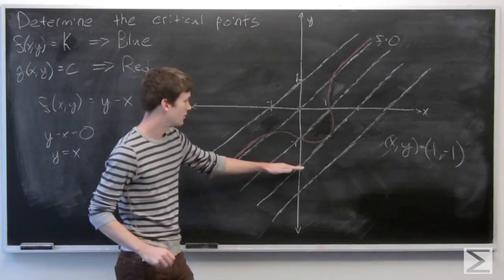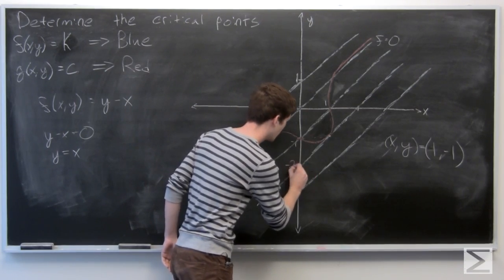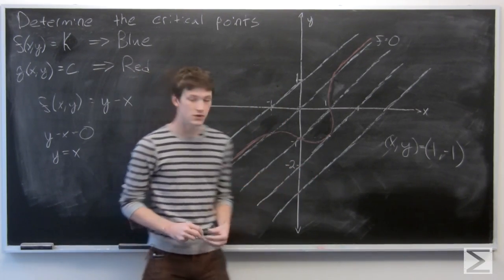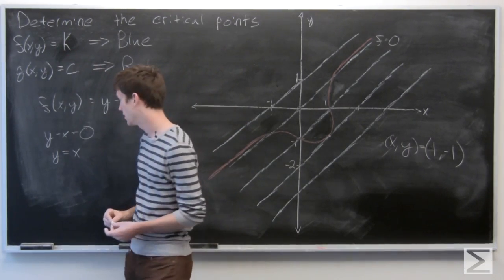So this point here is negative 2. So that means our y-intercept is going to be negative 2. So our constant k is going to be negative 2.